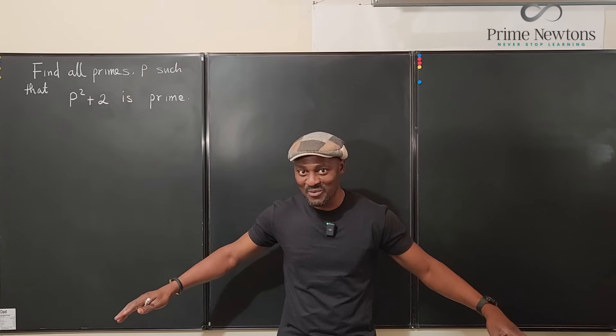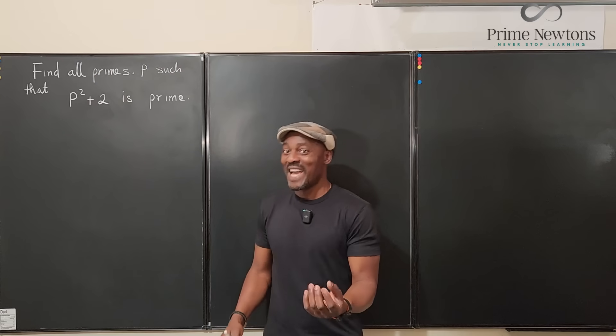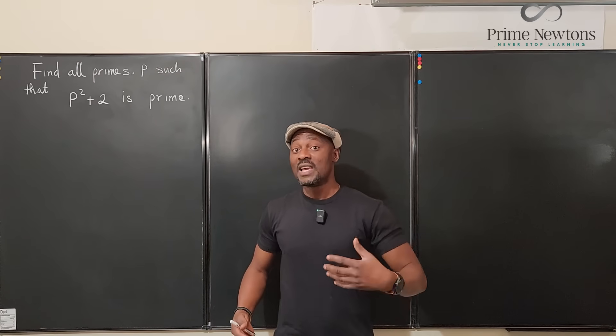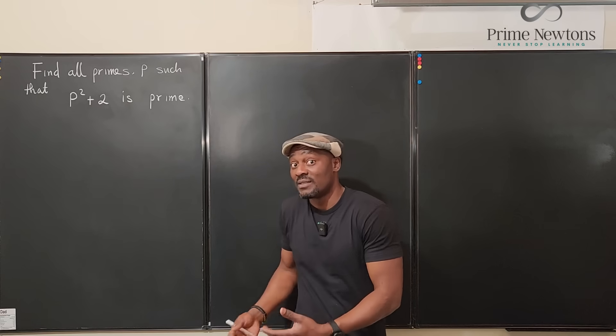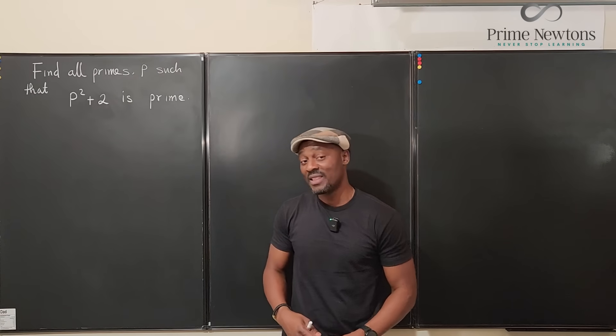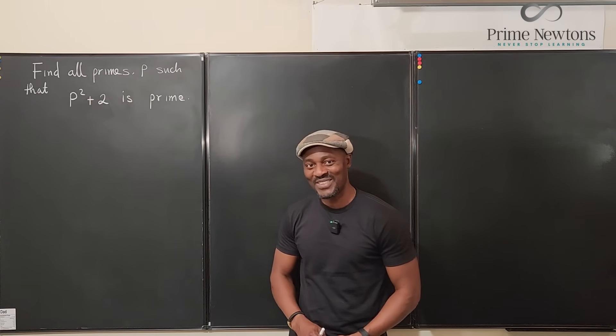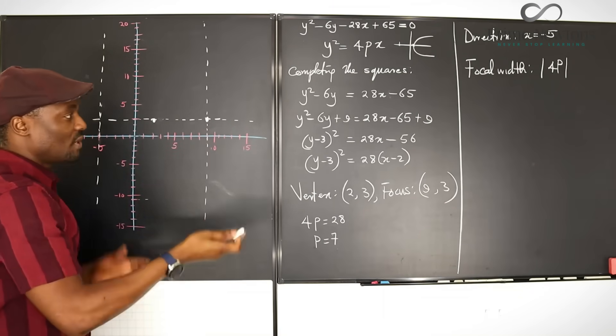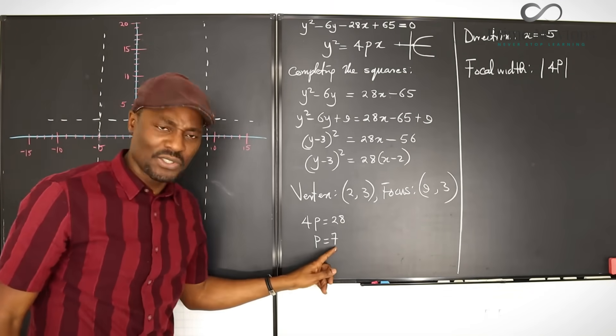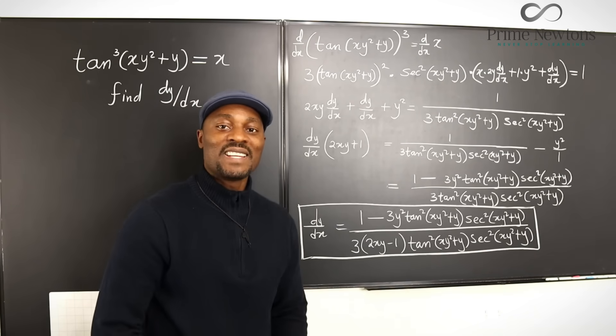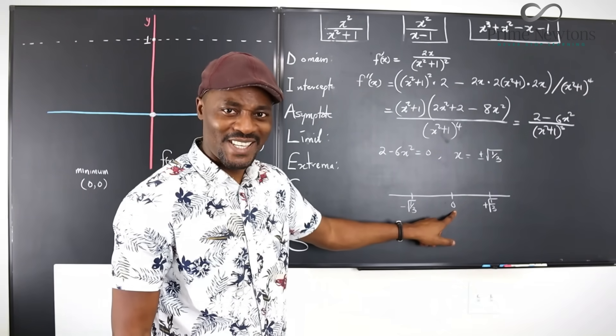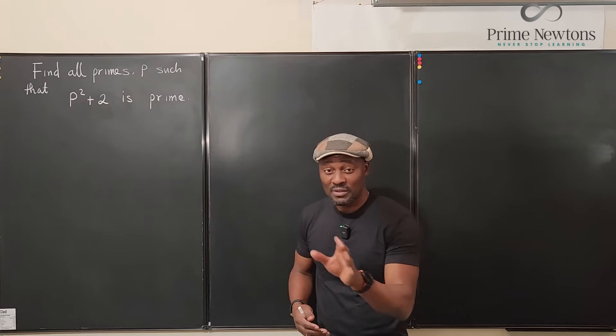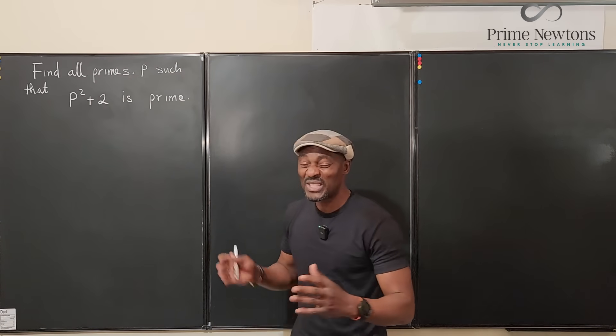So a good way to test whether one of those guesses I made is right is just to test starting from the smallest number and that's what we're gonna do. Let's get into the video. So what I'm gonna do is take the first few prime numbers and just see what I get, if it exists or does not exist.